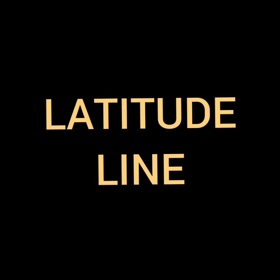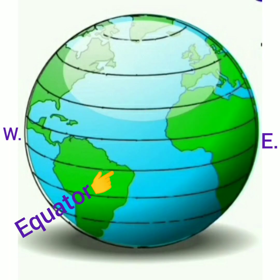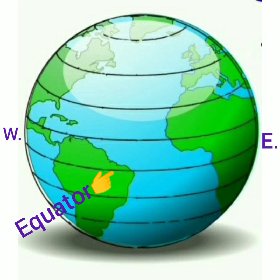Latitude lines. On the globe, you can see many circular lines parallel to the equator that move from west to east around the earth. When they reach the pole, they become smaller. There are 89 lines both in the northern and southern hemisphere. These lines are parallel to one another and never meet each other. These lines are also called parallel lines of latitude.